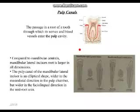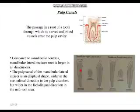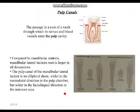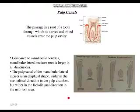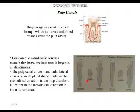The pulp canal is the passage through the root of a tooth through which nerves and blood vessels enter the pulp cavity — it's the same as the root canal. Here we're comparing the mandibular central and mandibular lateral incisors. The mandibular central incisor is the tiniest tooth in the mandible.